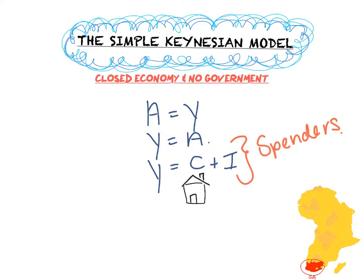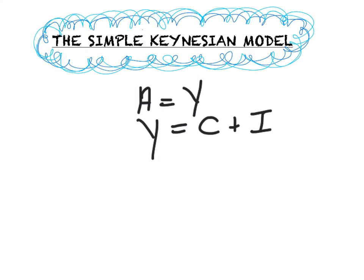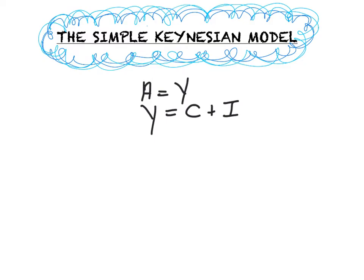C is our consumption spending. Consumption spending is spending that takes place by our households and consumers. Secondly, our investment spending. This is spending taking place by firms. The simple Keynesian model for an economy with no government or foreign sector has the following formula: A is equal to Y and Y is equal to C plus I. We know by now that our income is equal to our spending, so our spenders in the economy is C plus I.